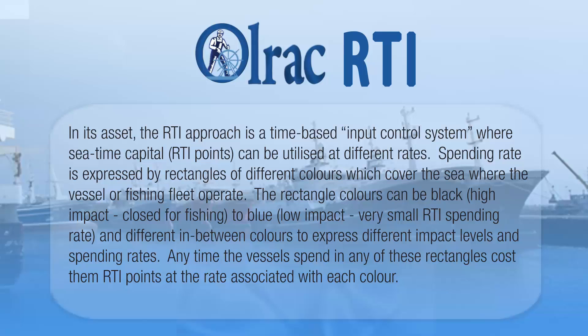Spending rate is expressed by rectangles of different colors which cover the sea where the vessel or fishing fleet operate. The rectangle colors can range from black — high impact, closed for fishing — to blue — low impact, very small RTI spending rate — with different in-between colors to express different impact levels and spending rates. Any time a vessel spends in any of these rectangles costs them RTI points at the rate associated with each color.